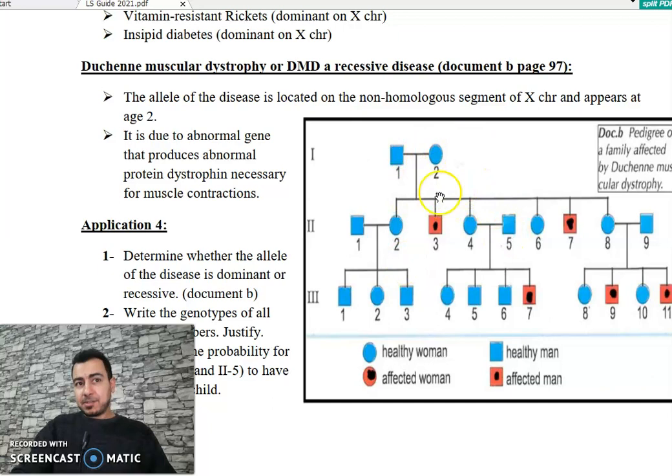This disease appears recessive because couple 1, 2 are phenotypically normal, but they have affected child 2, 3, who inherited the allele of the disease from at least one of the two parents. Then parents carry the allele of the disease but masked by the normal dominant allele. So the allele of the disease is recessive.